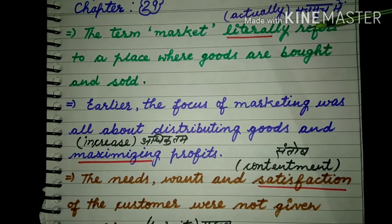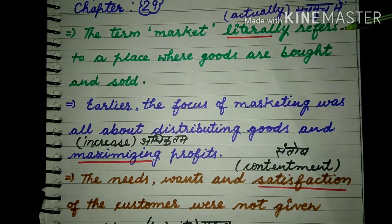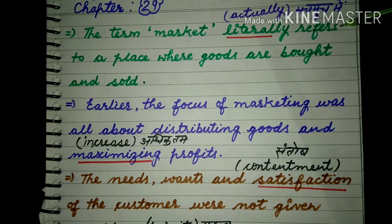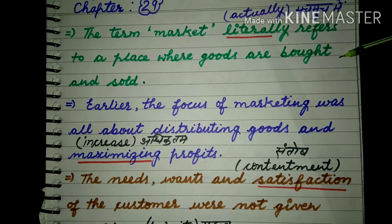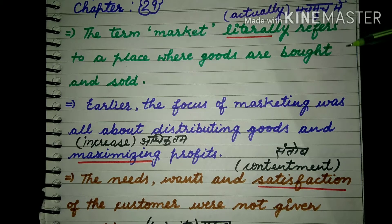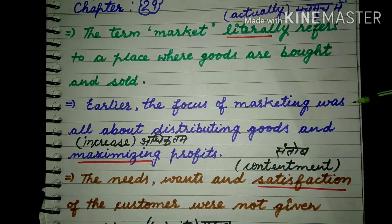The term market literally refers to a place where goods are bought and sold. यहाँ literally means वास्तव में, सचमुच। Market हमें एक ऐसे स्थान की व्याख्या करता है जहाँ goods, यानि माल, बेचा जाता है और खरीदा जाता है।